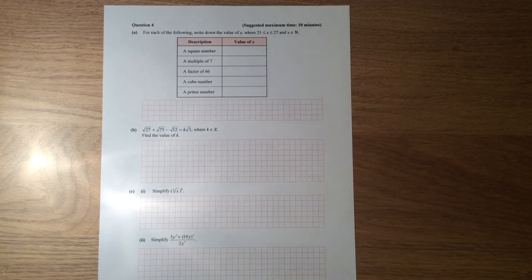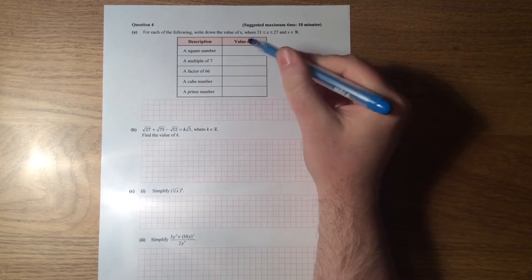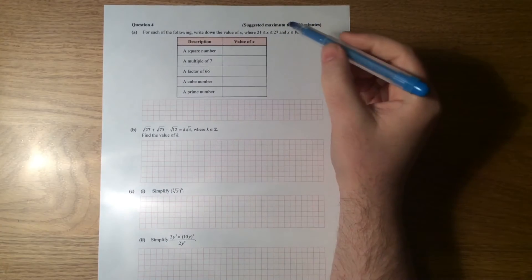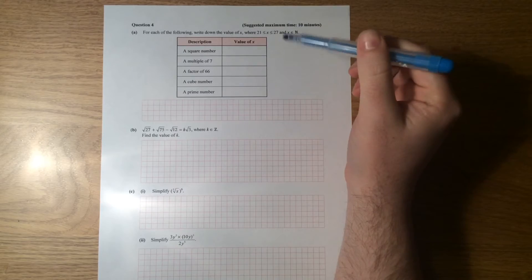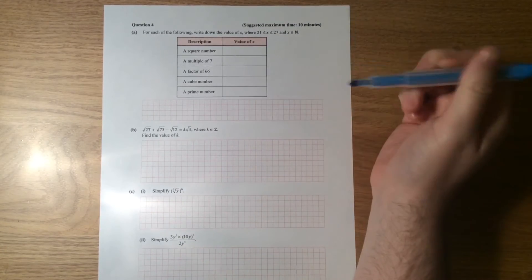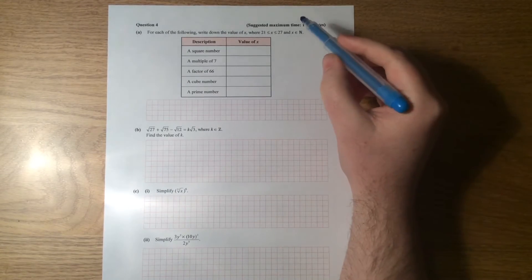Okay, so this is question 4 of the mock paper for Maths Junior Certs, paper 1. And it starts off, this is an indices and a number question. So for each of the following, write down the value of x.